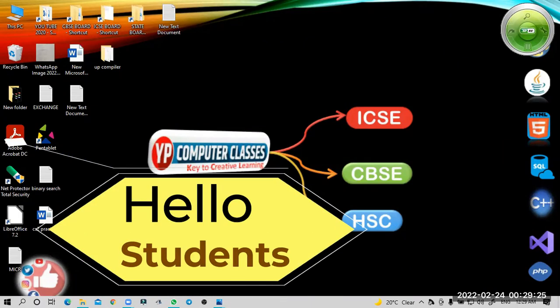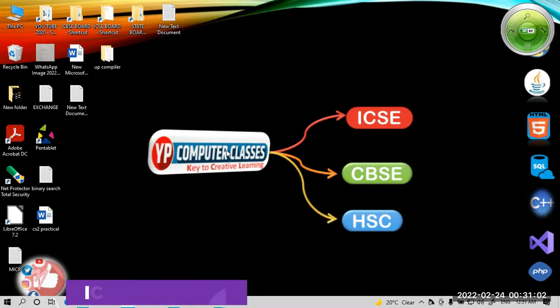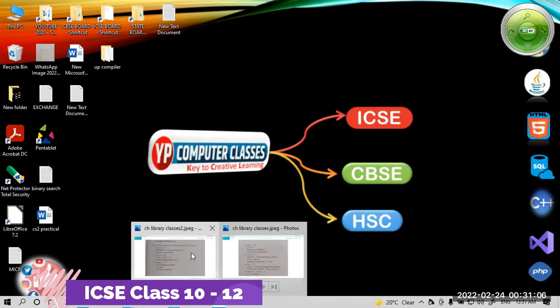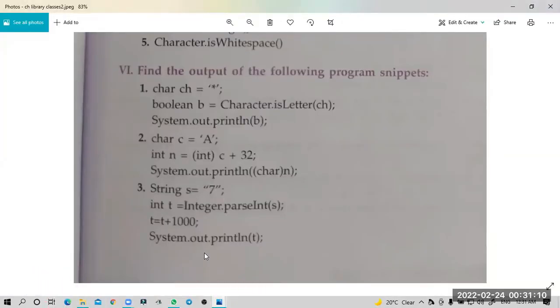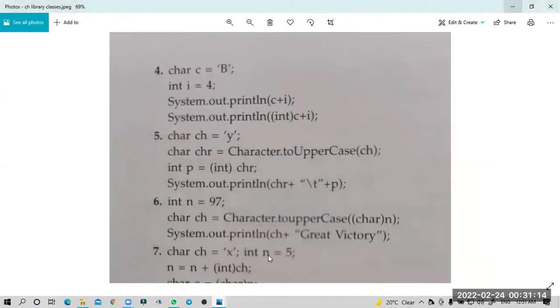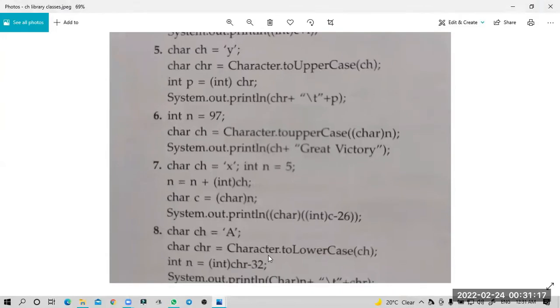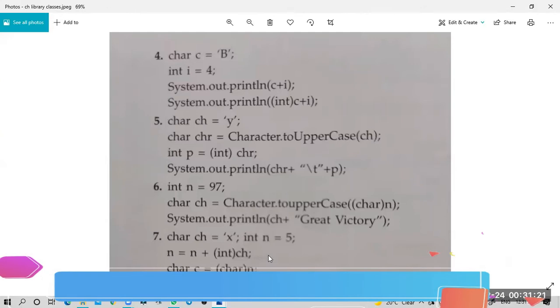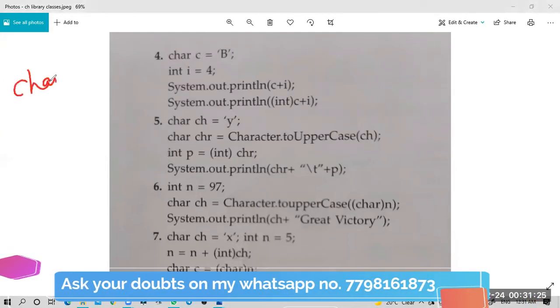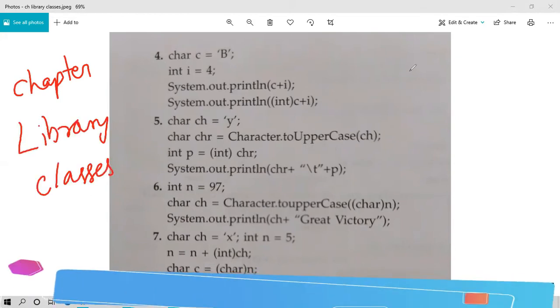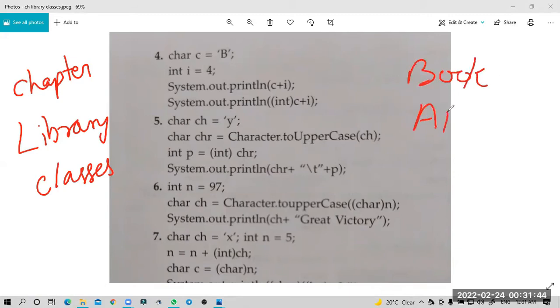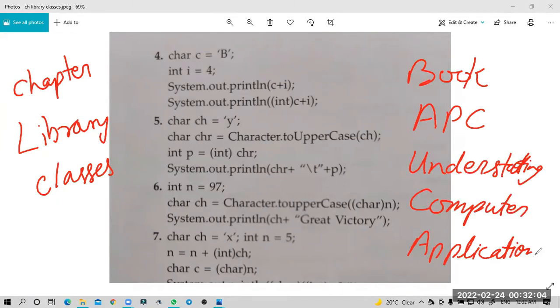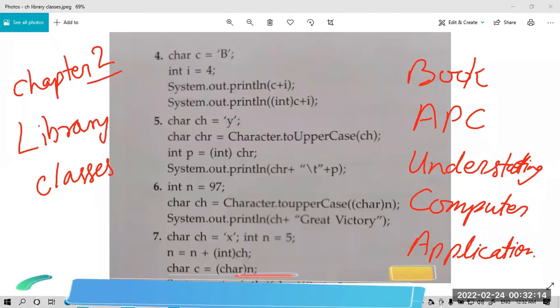Hello students, welcome to Creative Learning. In this video we will discuss output questions - eight total output questions from chapter Library Classes in the book APC Understanding Computer Application. Let's start one by one.